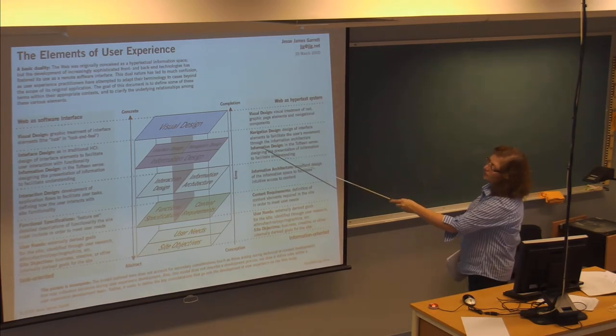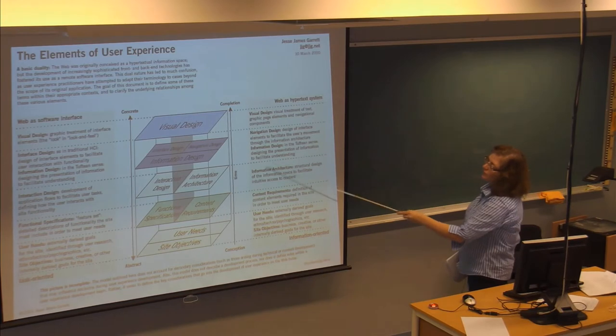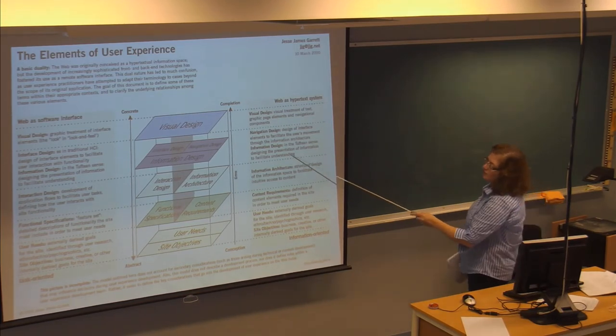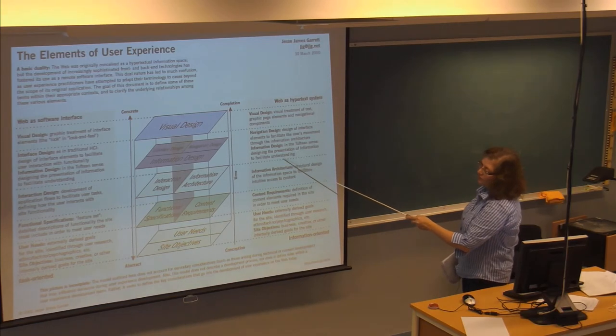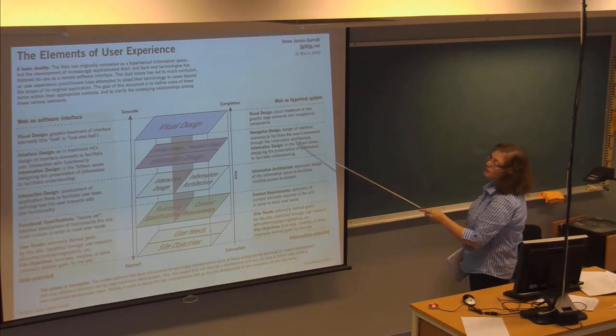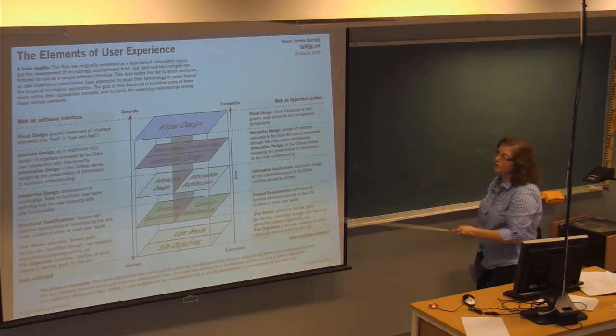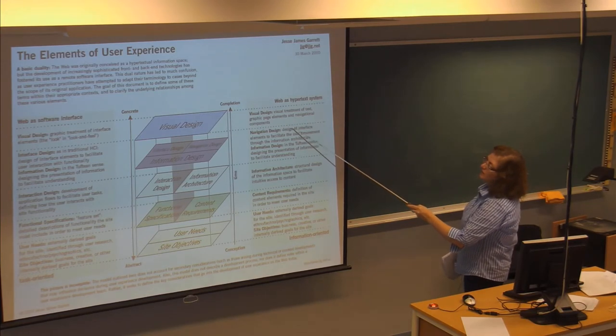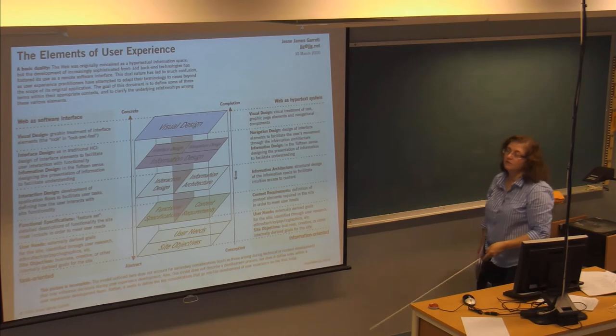Navigation, information design, and visual design are also elements of information architecture. Designing the presentation of information so it can be understood. And navigation, how the users move about through the information architecture. And then, the visual design is, is it appealing? Does it relate well to the navigational elements of the site?